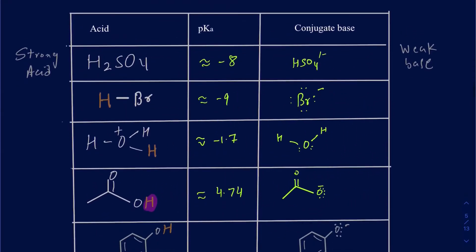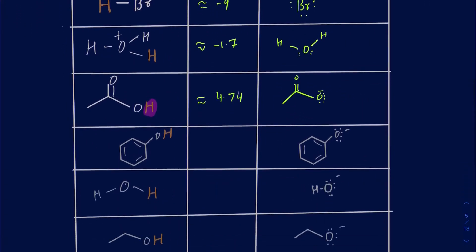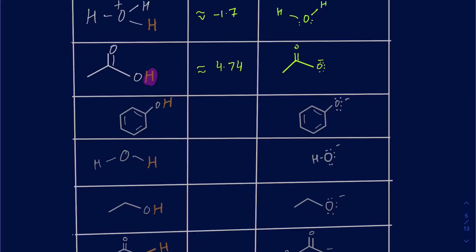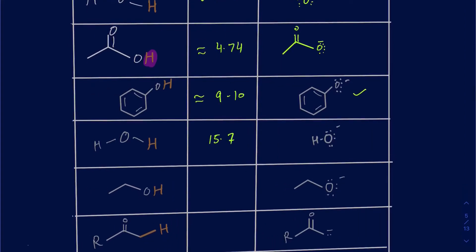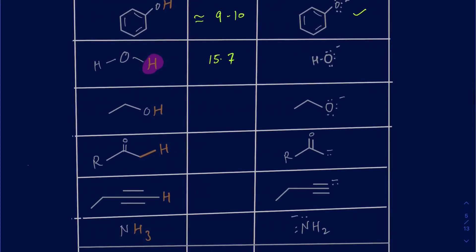The next one is phenol. The conjugate base is drawn after losing that proton. The pKa of phenol is about 9 to 10. Then we have water — the pKa of water is about 15.7, and the conjugate base after removing the proton is OH-. For an alcohol, after losing the proton we get an alkoxide with a negative charge on oxygen. Alcohols are slightly more basic than water; the pKa of a typical alcohol is around 16 or higher. So water is actually a little more acidic than alcohol.